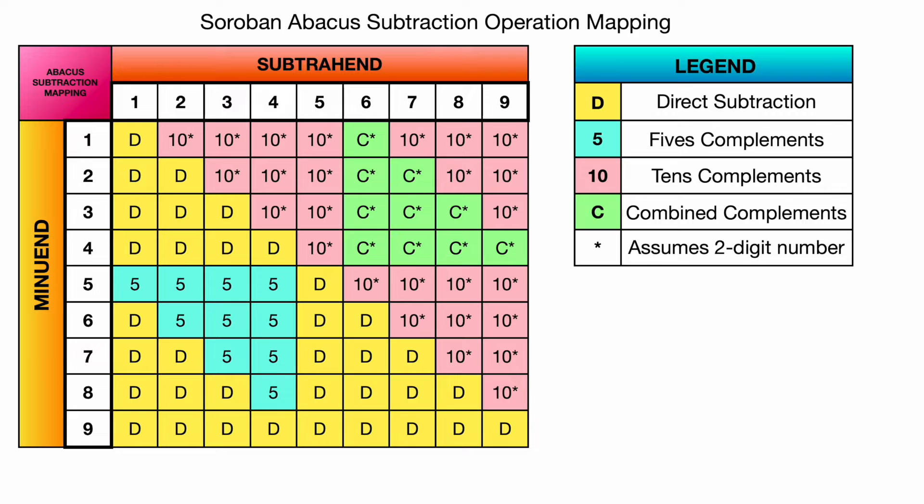Okay, so this is our Soroban abacus subtraction operation mapping. We did a similar one of these for addition in one of the previous videos. So this big chart here basically shows you the minuend are these numbers on the left column. This is the number you're starting with. And the subtrahend are these numbers in the top row. That is the number that you're going to be subtracting from the minuend. And the result is the difference.